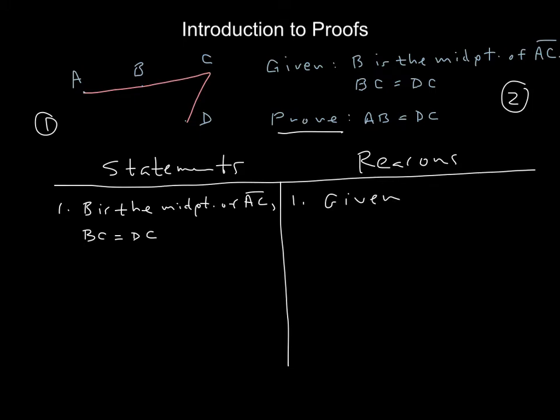So before we do anything in this proof, in any proof, our proof should have at least three things. Number one, a drawing. Number two, a give and improve statement. And now I'm going to put a number three over here to the right. A two-column setup with statements on the left, reasons on the right, and we're going to number.